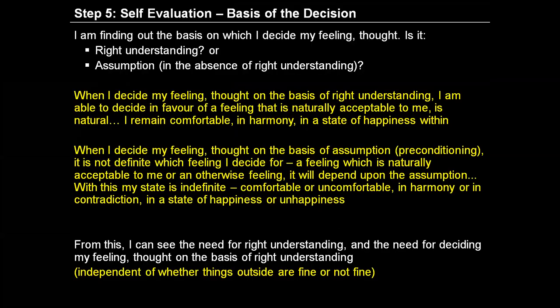So let me explain a little more about Step 5. Whenever I am thinking of a feeling, looking at the feeling, this feeling has to do with my relationship with the reality that I am looking at. For example, when I am looking at a human being, I am deciding my feeling for that human being. All this feeling, all this thought, has to do with fulfillment of my relation with a given reality — in this case a human being.